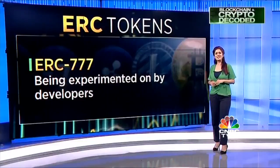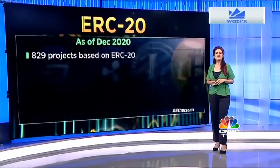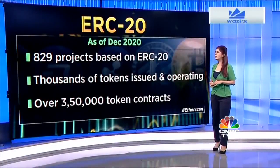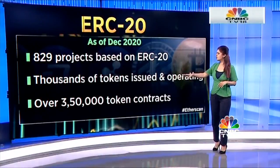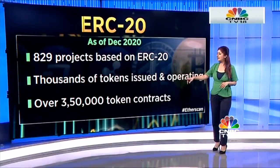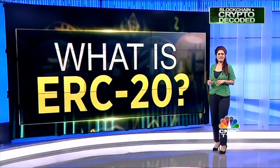ERC-777 is currently being experimented on by developers. As of December 2020, there are 829 projects based on the ERC-20 token. Thousands of tokens are issued and operating, with over 350,000 token contracts deployed so far.